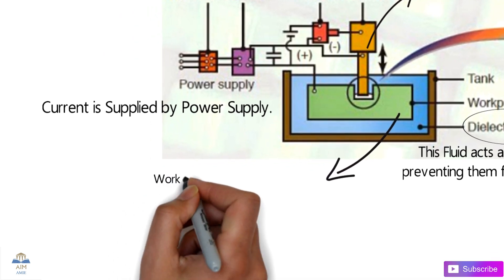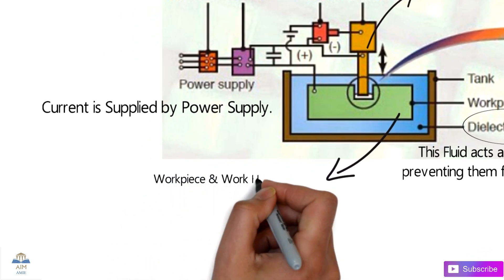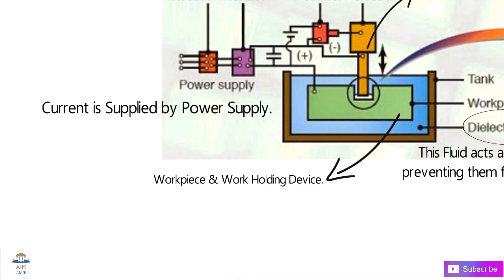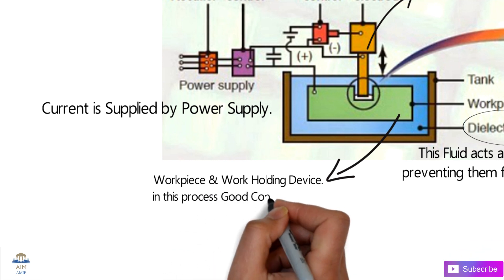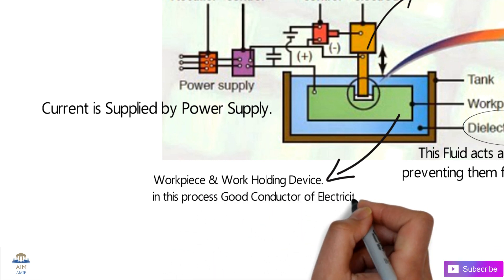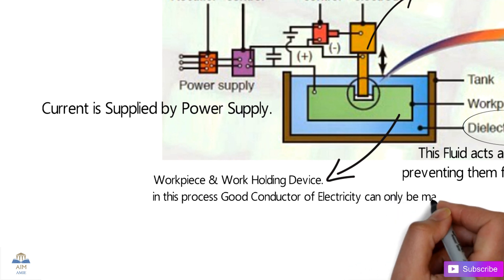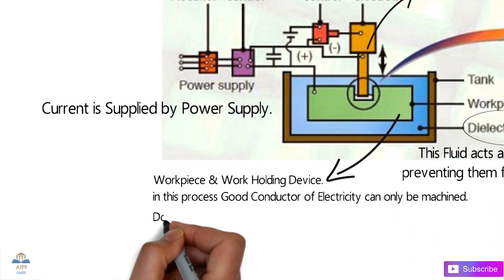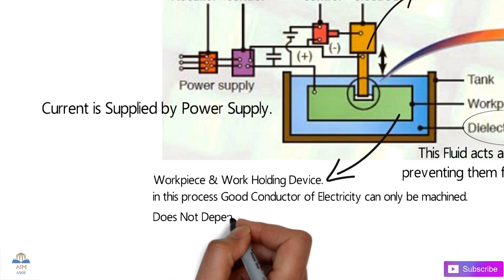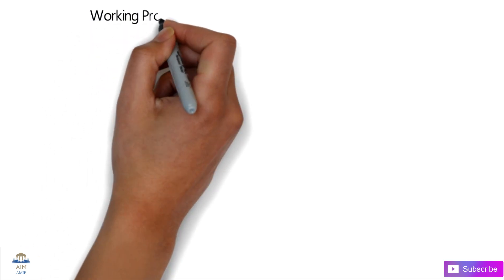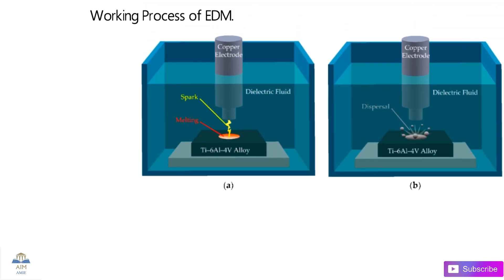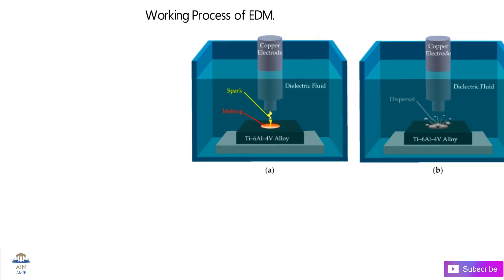The next equipment is the workpiece, also called the work-holding device. In this process the workpiece needs to be a good conductor of electricity — only if it is a good conductor can it be machined. The process does not depend on the hardness of the workpiece; the hardness can be very high or very low and it can still be machined.